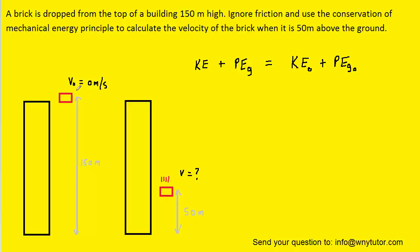And then we set that equal to the initial kinetic energy and the initial gravitational potential energy. Now, since the brick has an initial velocity of 0 meters per second, that means its initial kinetic energy is 0. It's not moving so there will be no kinetic energy. So we can simplify the equation.